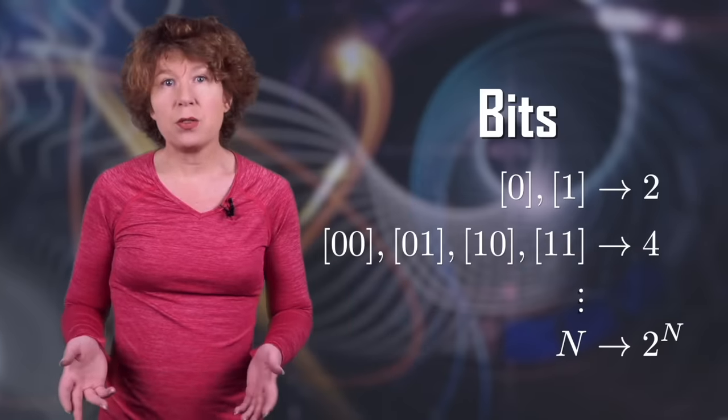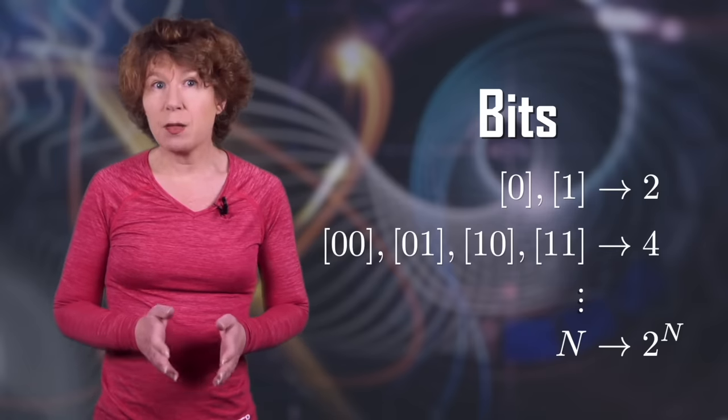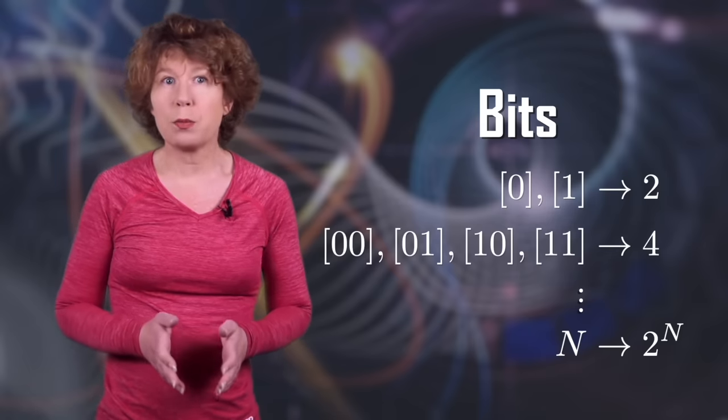First things first, what's a quantum computer? A quantum computer performs calculations on quantum bits, qubits for short, rather than the normal bits that conventional computers run on. A classical bit can be in two states, usually denoted zero and one. If you have n bits, you get 2 to the n possible states.